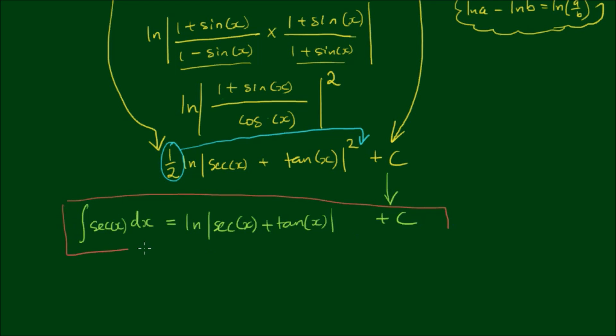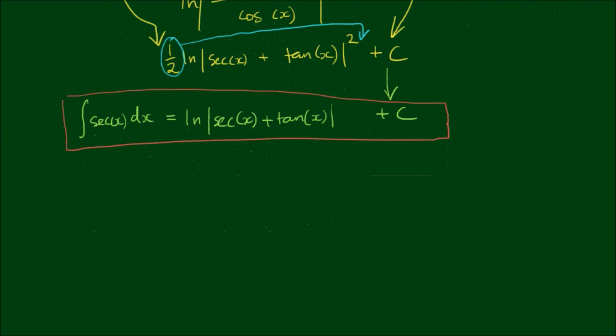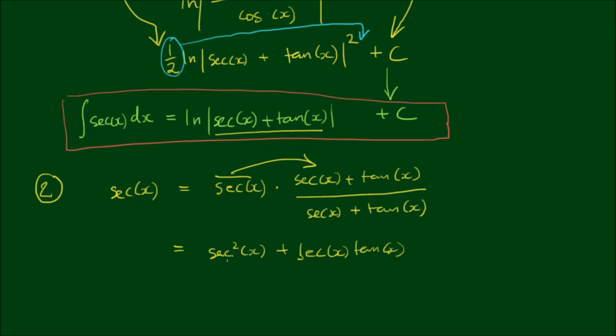So that's the method of partial fractions. Now as I said the second method is much less intuitive because it sort of requires us to know this result already. So again if we say that sec x, we can write sec x as sec x multiplied by sec x plus tan x divided by sec x plus tan x. So again I'm just multiplying by 1. And I expand this sec into the numerator. So I get sec squared x plus sec x tan x over the denominator sec x plus tan x. So the integral now is the integral of sec x is equal to this integral here.